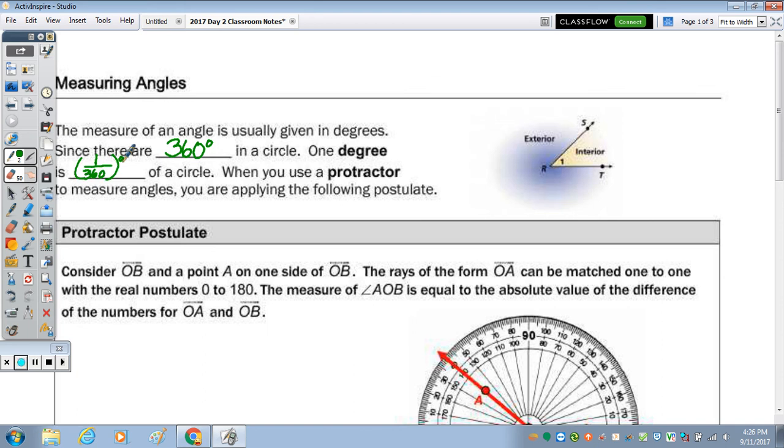When you use a protractor to measure angles, you are applying the following postulate. Before we look at the postulate, I just want to highlight over here, this angle one is also named SRT, or angle TRS with R being the vertex. And we have the interior of the angle and the exterior of the angle.